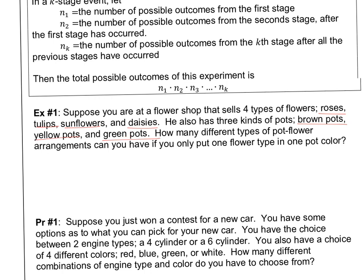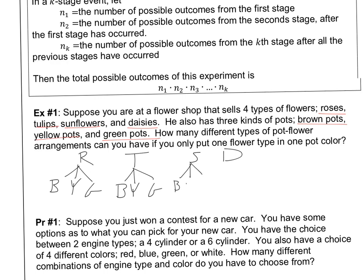We need to think about how many combinations we have in each stage. For each flower — roses, tulips, sunflowers, daisies — you could have brown, yellow, or green. So you get three options for each of the four flowers, giving you 12 total. The simple way: four options in stage one multiplied by three options in stage two equals 12. That's the counting principle — just multiply each stage together.